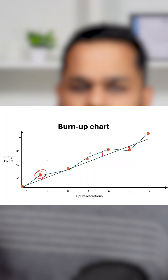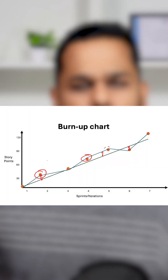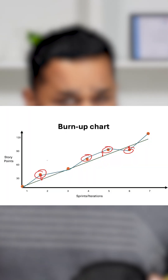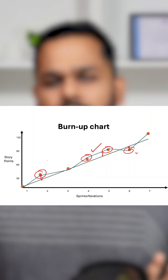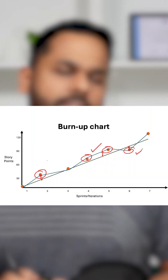Whenever your points are higher, it means you have accomplished more. Whenever your points are lower than the planned line, it means you have accomplished less. Here you are ahead of schedule; here you are behind schedule. Burn-up and burn-down charts both help us in understanding our performance through a particular release or through a particular iteration.